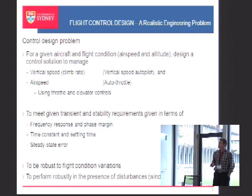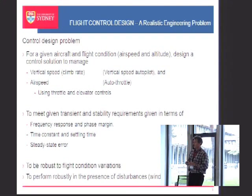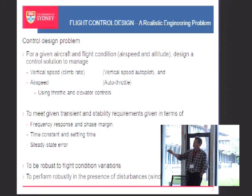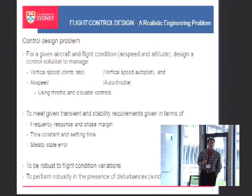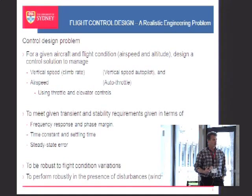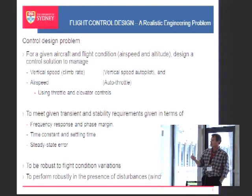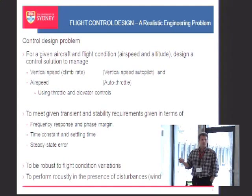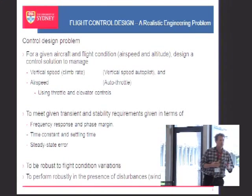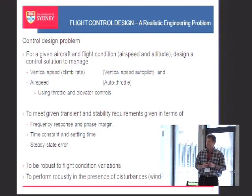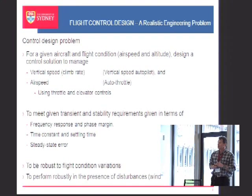The design problem that they're given is to design a flight control system for a high-order, fully mobile airplane in six degrees of freedom. We're particularly looking at a problem where the airplane is flying in a longitudinal sense — it's climbing and we're managing the airspeed. So we want to design a control loop that controls the climb rate on climb-out from takeoff and manages the airspeed as well, because if we climb without managing the airspeed it will drop and the airplane will stall. They're given specifications including frequency response criteria, time constant, settling time, and steady-state error — standard control design requirements.